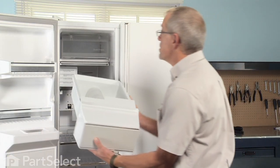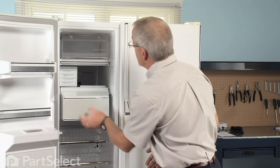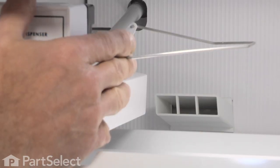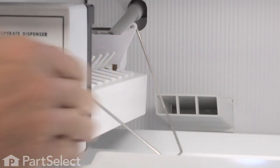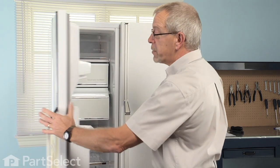Simply slide the ice bin back on its track. Don't forget to lower the ice maker shutoff arm, and our repair is complete.